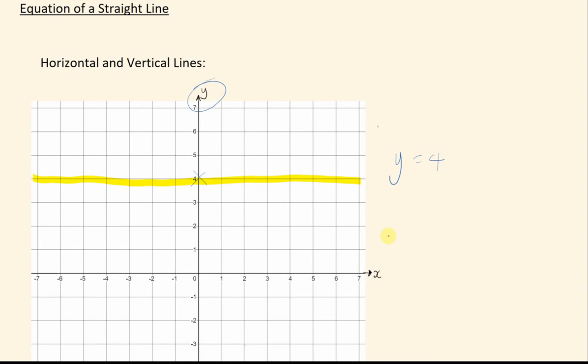Just a few more examples, that's y equals 4. If you wanted, say, x equals minus 1, you go to the x-axis, you find where minus 1 is, and you want a straight line going through that.